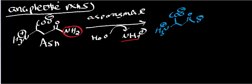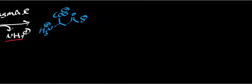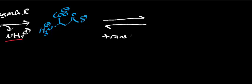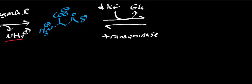It turns out that aspartate is in equilibrium with oxaloacetate, and the enzyme that catalyzes this reaction is called a transaminase. Specifically, in this direction, you're going to put in an alpha-ketoglutarate and get out a glutamate. So what you end up with is oxaloacetate.